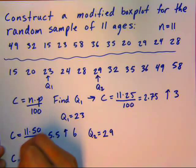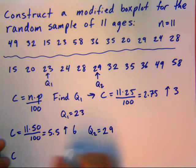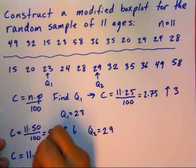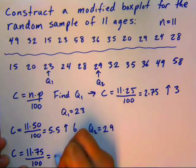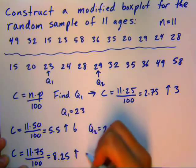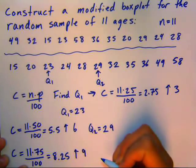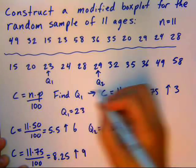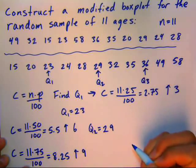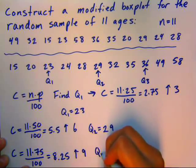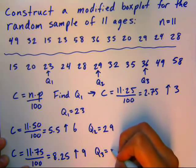And then for the last quartile, which is the same thing as the 75th percentile, we would take 11 times 75 over 100, comes out to be equal to 8.25. It's a decimal. Round up. Don't use your regular rounding rules. Round up to the next integer. So that's the 9th value in the data set. Count over 9 numbers. And that 9th value would be your 3rd quartile. So Q3 equals 36.